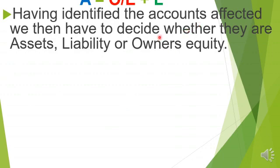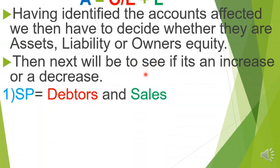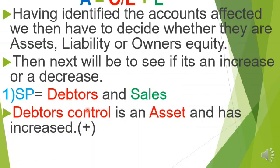Having identified the accounts affected, we then decide whether they fall under Assets, Liabilities, or Owner's Equity, and whether each represents an increase or decrease. Starting with the selling price: Debtors' Control is an asset, and since goods are sold on credit, what we are owed increases — so assets increase.